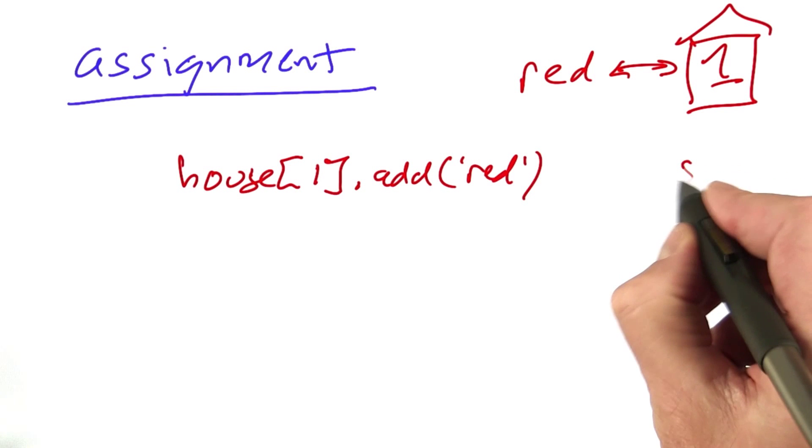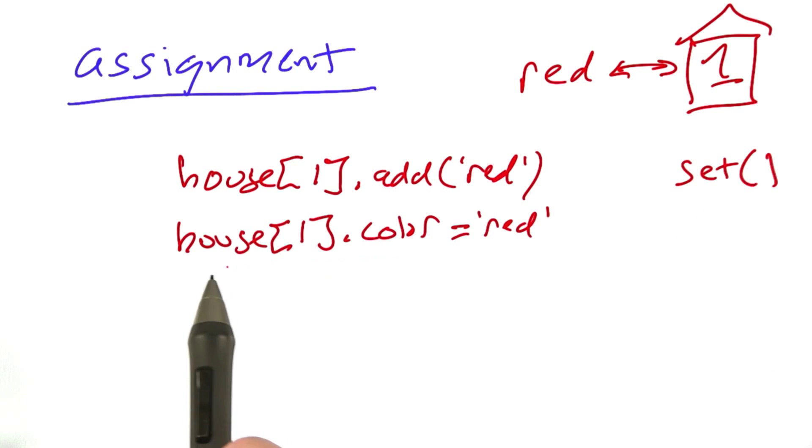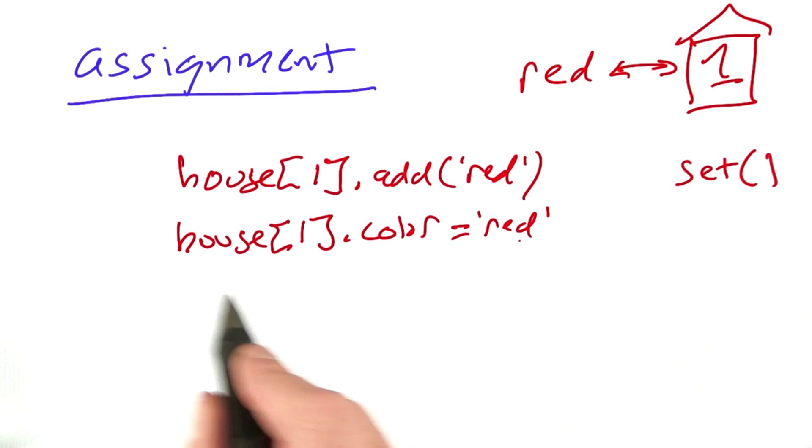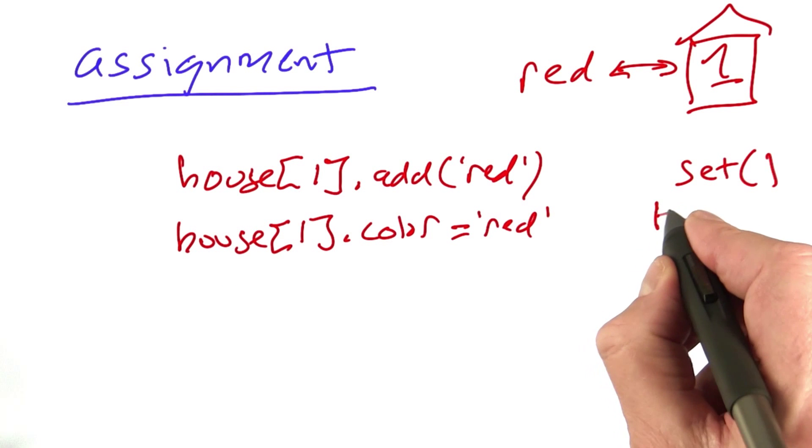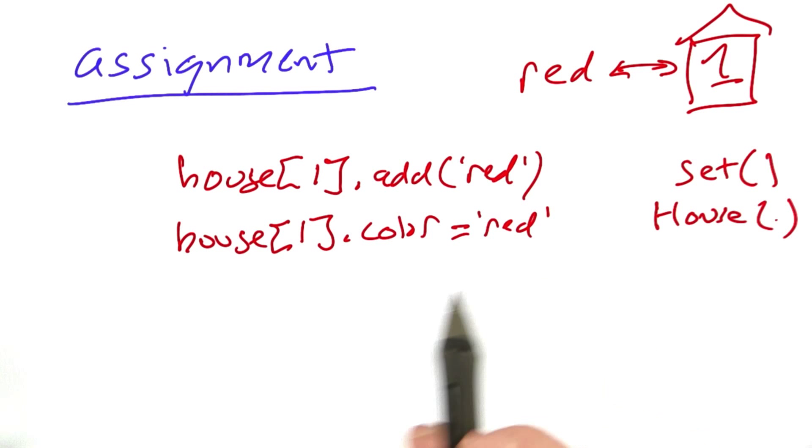Here's another possibility where we take house number 1, we set its color property equal to red. Here each house would have to be represented as a user-defined custom class which had properties for color and nationality and so on.